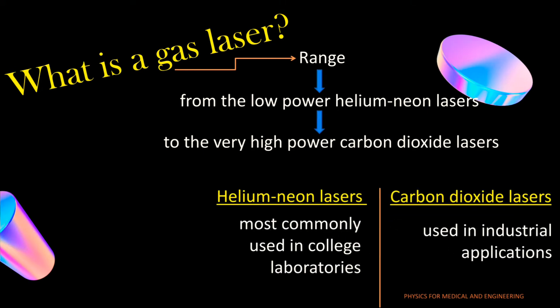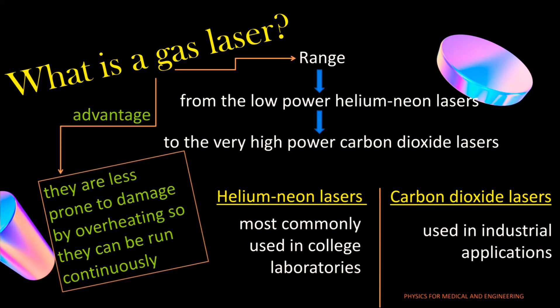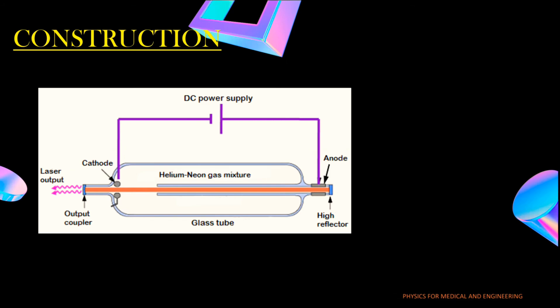The helium neon lasers are most commonly used in college laboratories whereas the carbon dioxide lasers are used in industrial applications. The main advantage of gas lasers over solid state laser is that they are less prone to damage by overheating, so they can be run continuously. Now let's see the construction of helium neon gas laser.